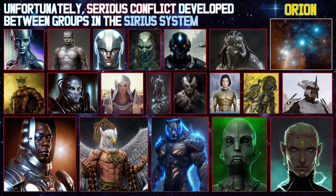Unfortunately, conflict developed between the groups in the Sirius system. The elders of Sirius intervened and moved the groups to Orion, which is 720 light-years from Earth.